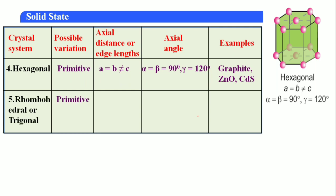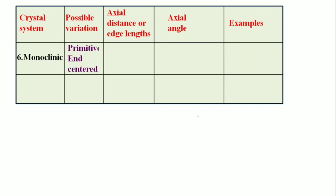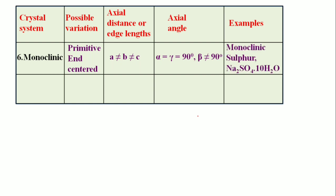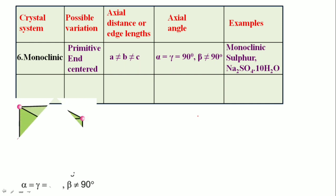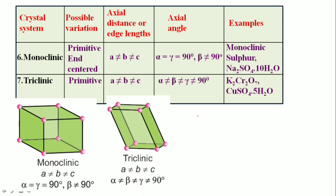Fifth: rhombohedral or trigonal — primitive; a = b = c; α = β = γ ≠ 90° (but all three equal); example: calcite. Sixth: monoclinic — primitive and end-centered; a ≠ b ≠ c; α = γ = 90°, β ≠ 90°; example: monoclinic sulfur, Na₂SO₄. Seventh: triclinic — primitive only; a ≠ b ≠ c; α ≠ β ≠ γ, none equal to 90°; examples: K₂Cr₂O₇, CuSO₄·5H₂O.